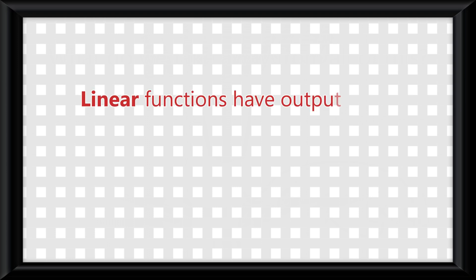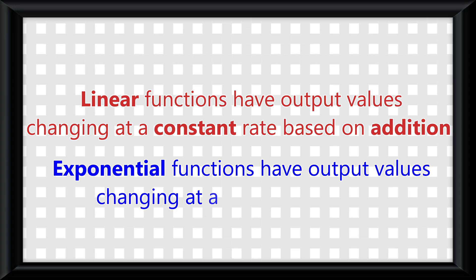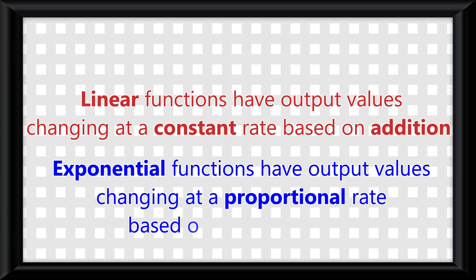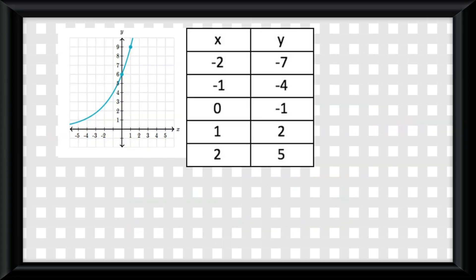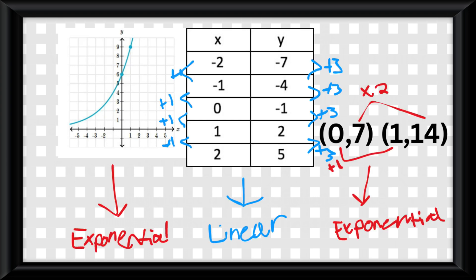So what do we take away from all of this? Well, here it is: linear functions have output values changing at a constant rate based on addition, and exponential functions have output values changing at a proportional rate based on multiplication. Which is why if you see a graph, table, or even just two points, you should be able to tell me whether it is exponential or linear.